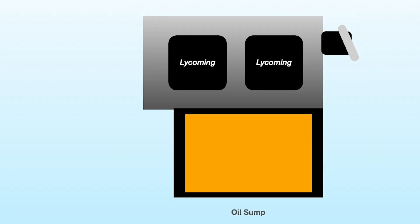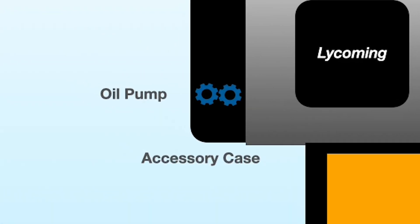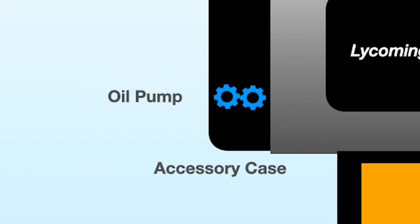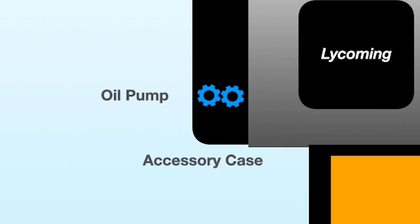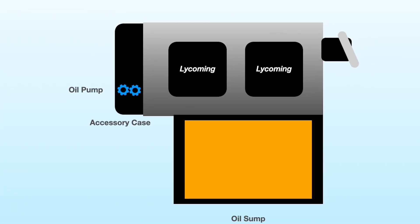The oil pump of many engines is a gear type pump located inside the accessory case. The gears in this pump are directly driven by the crankshaft and force oil into all the crevices and passages as it routes through the engine.